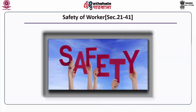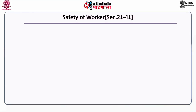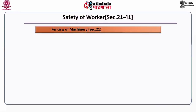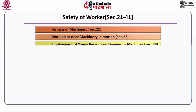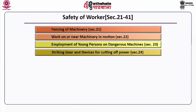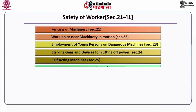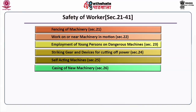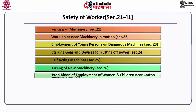Chapter 4 discusses the various provisions relating to the safety of workers, ranging from Section 21 to 41. These include: Section 21 — fencing of machinery; Section 22 — work on or near machinery in motion; Section 23 — employment of young persons on dangerous machines; Section 24 — striking gear and devices for cutting off power; Section 25 — self-acting machines; Section 26 — casing of new machinery; Section 27 — prohibition of employment of women and children near cotton openers.